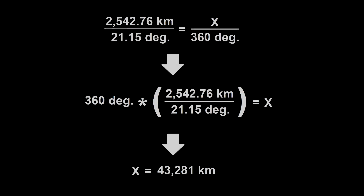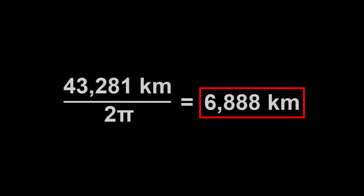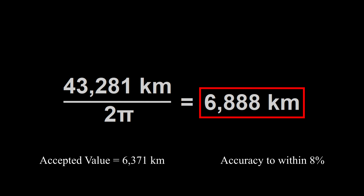Doing the math and solving for x gives us the circumference of the earth: 43,281 kilometers. Taking that value and dividing by 2π gives us the radius of the earth: 6,888 kilometers. The accepted value is 6,371 kilometers, meaning despite our imperfect method, we are within 8% of the accepted value — not bad at all.